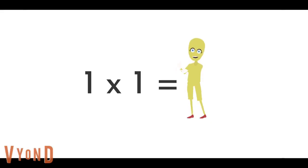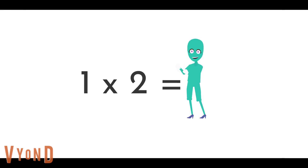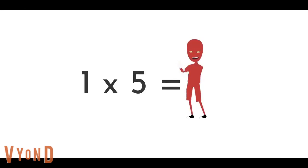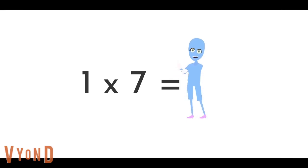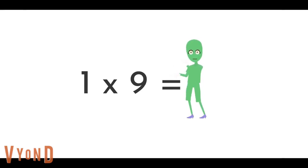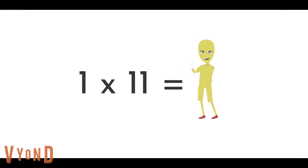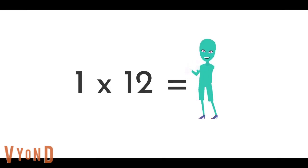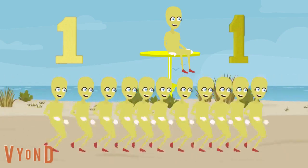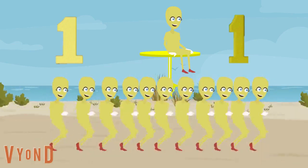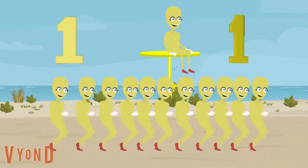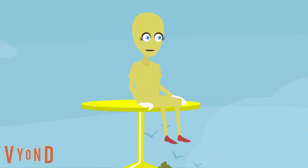Let's do this thing! One times one is one. One times two is two. One times three is three. One times four is four. One times five is five. One times six is six. One times seven is seven. One times eight is eight. One times nine is nine. One times ten is ten. One times eleven is eleven. One times twelve is twelve. Any number multiplied by one, you get that number and you're done. One times table — want some more? No way, because you're done!